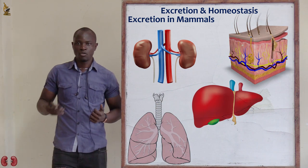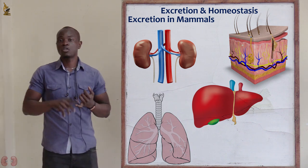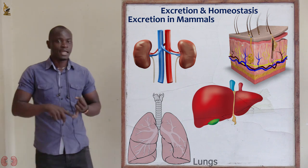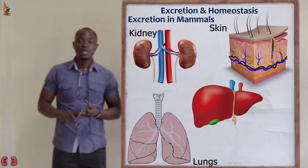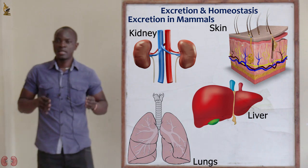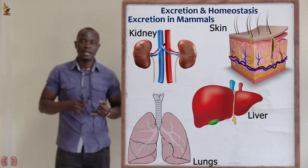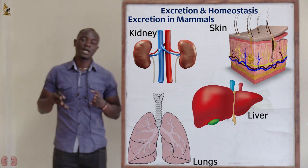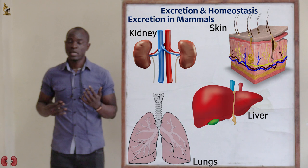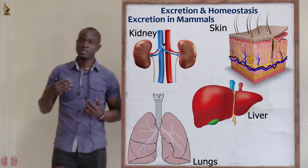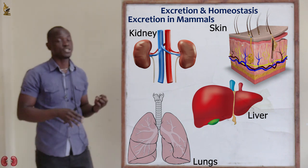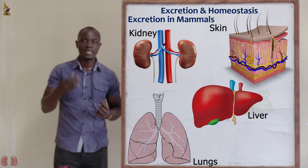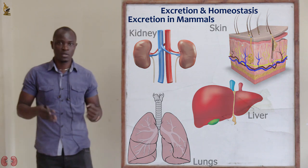The main excretory organs in human beings include the lungs, the skin, the kidneys, and the liver. In the gases exchange topic, we also studied how lungs are able to remove excess carbon dioxide and excess water vapor from the body. You can go back and re-watch that video on gases exchange to understand in detail how the lungs remove these waste products.